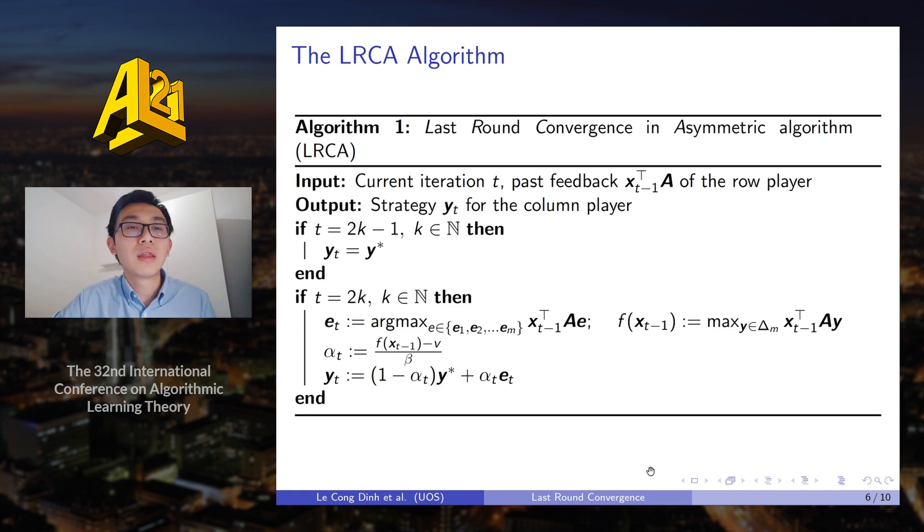And then in the even rounds, the column player will play a mix of the min-max strategy and the best response with respect to the last feedback to exploit the row player. And the level of exploitation depends on how far away the strategy of the row player to the min-max equilibrium of the game, which is measured by f(x_t) - V.